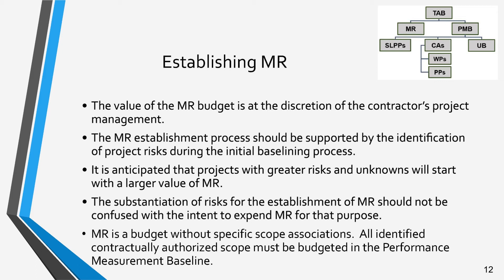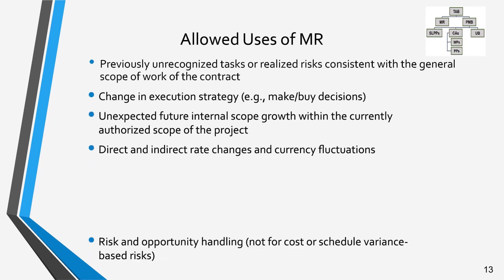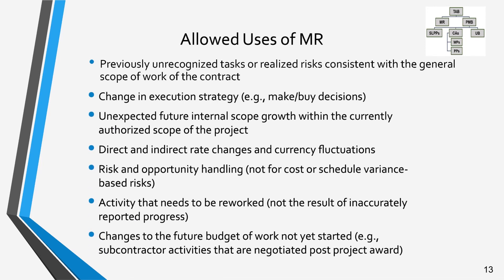MR is a budget without specific scope assumptions. All contractually authorized scope must be held in the performance measurement baseline and distributed to control account managers in a timely manner. Generally, MR can be used by the contractor's PM to plan or re-plan future effort not yet started. It may be used for previously unrecognized tasks and identified risks that are consistent within the scope of work of the contract. All risks, unrealized and realized, are usually identified, quantified, and tracked through a risk register.